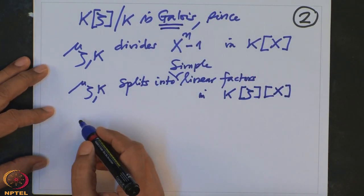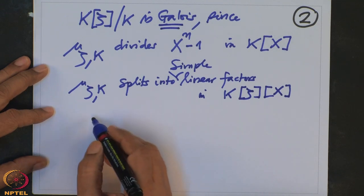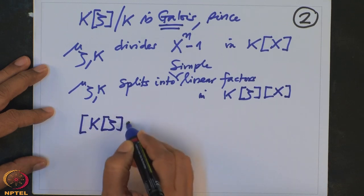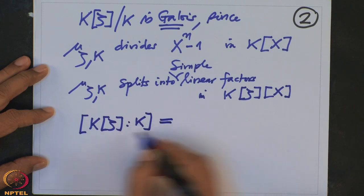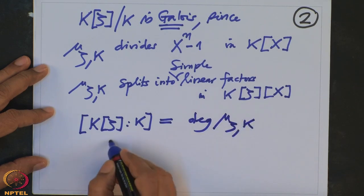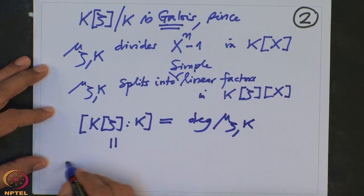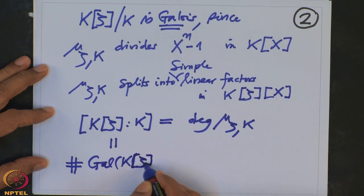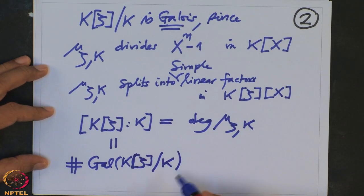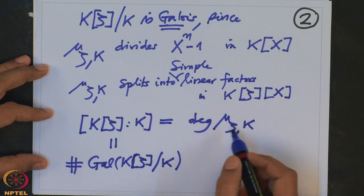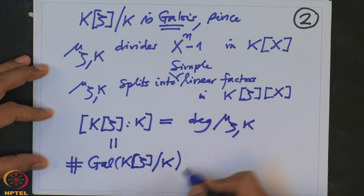We also know the degree of the field extension K(ζ)/K: since it is a simple extension it equals the degree of the minimal polynomial μ_{ζ,K}. Because it is Galois, this degree also equals the order of the Galois group of K(ζ)/K. However, we do not know exactly what μ_{ζ,K} is, therefore we do not know the degree exactly, but we still want to conclude about the structure of this group.